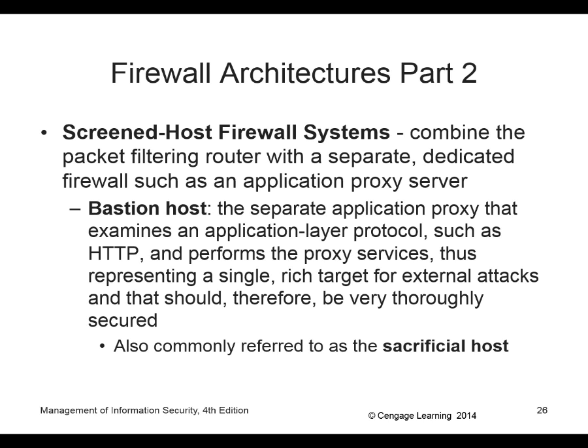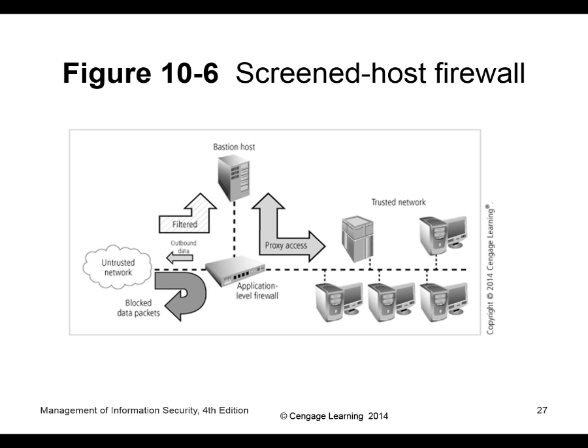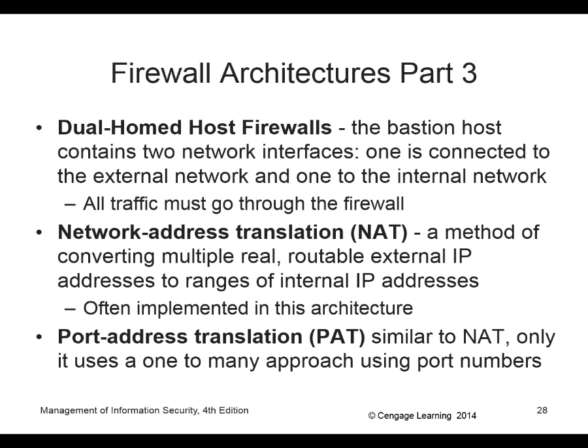A dual home system has two network cards — one might be to the outside area and one to the inside area, kind of like a firewall with an external card and an internal card. That's what your router is at home — you have a cable modem that connects on one side, and the other connects to your internal network.